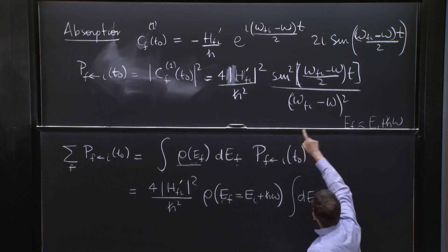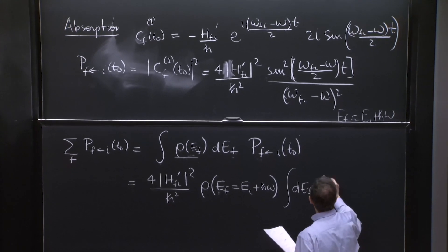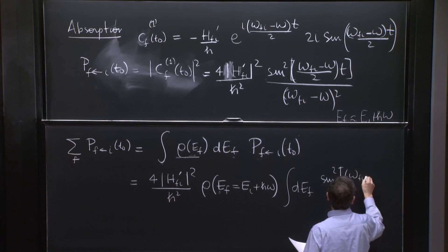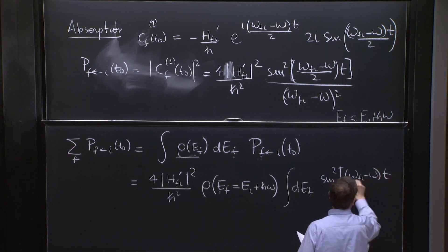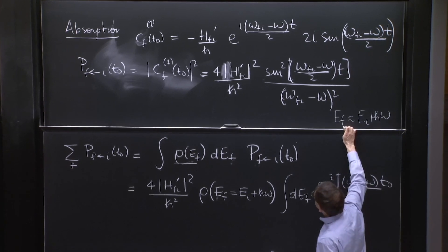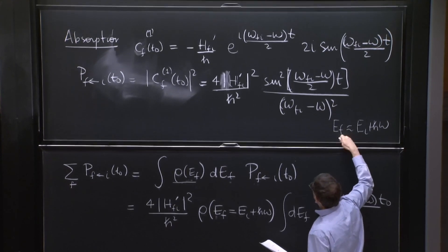And then the rest of the integral is dEf. You still have dEf and the sine function. So sine squared of omega fi minus omega t over t naught. I'm sorry, I'm using t naught everywhere.